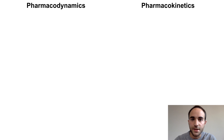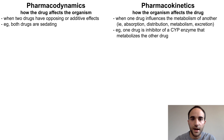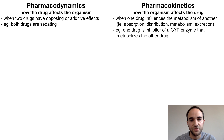First, let's review some terminology and basic concepts. The two main areas of pharmacology are pharmacodynamics and pharmacokinetics. Pharmacodynamics refers to how the drug affects the organism. Drug-drug interactions in this area occur when two drugs have opposing or additive physiologic effects. By contrast, pharmacokinetics refers to how the organism affects the drug — in other words, how the person's body metabolizes the drug. Drug-drug interactions in this area occur when one drug influences the metabolism of another drug by affecting its absorption, distribution, metabolism, or excretion.